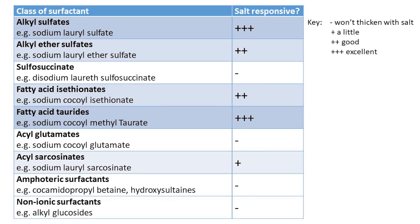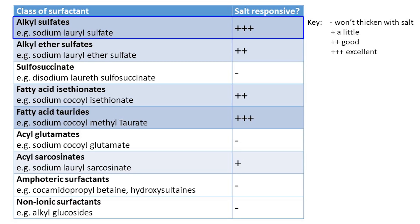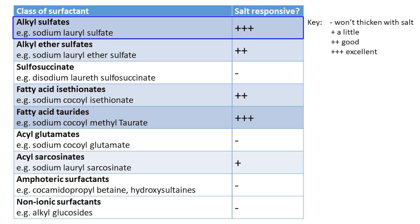Here's a list of surfactant classes that do respond to salt and can thicken when salt is introduced into the formula in just the right amount. Alcohol sulfates are very salt responsive, as are fatty acid taurides — for example, sodium lauryl sulfate and sodium methyl cocoyl taurate. These particular materials thicken very easily when salt is added to the formula.